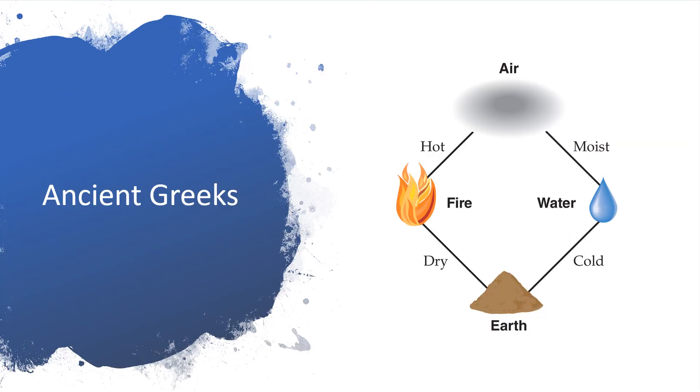One of the ideas held by the ancient Greeks was that matter was composed of four elements: the earth, water, air, and fire. And any other substance could be made by combining these four elements in different ratios.